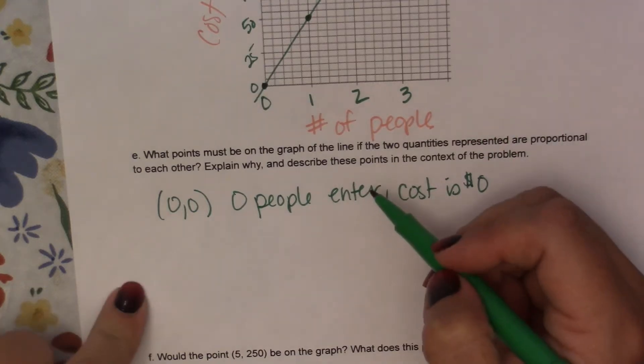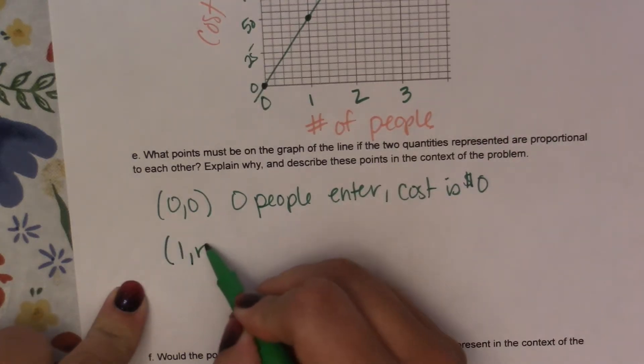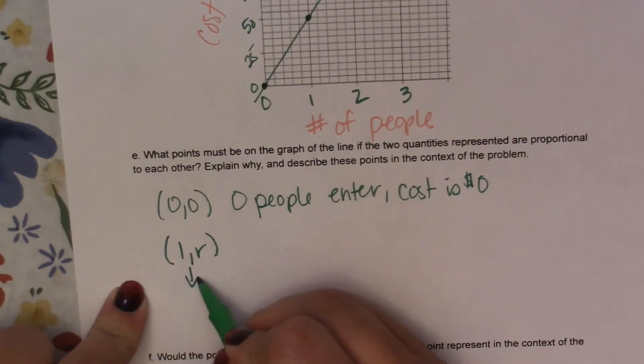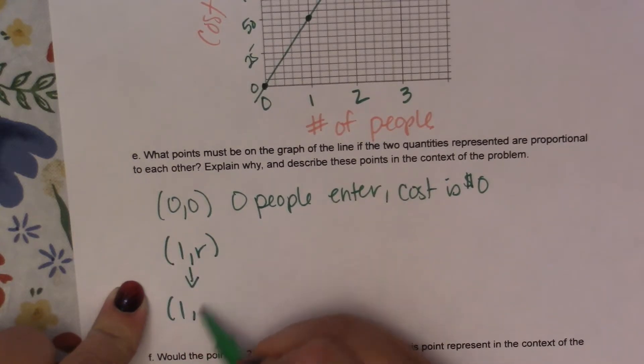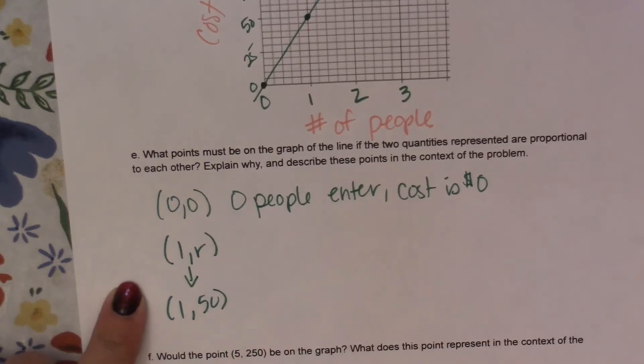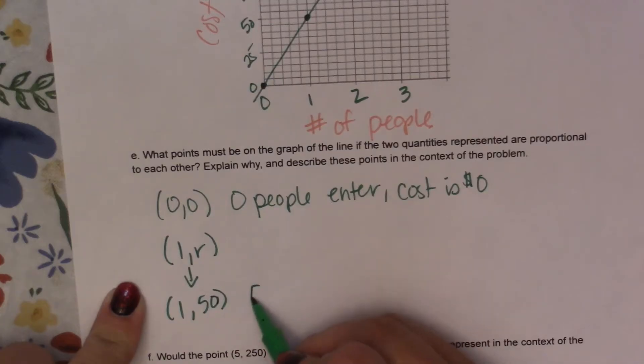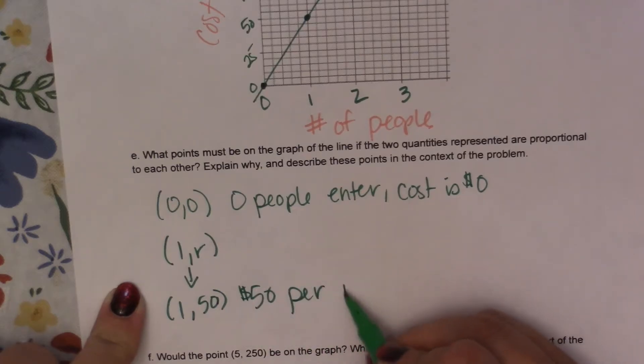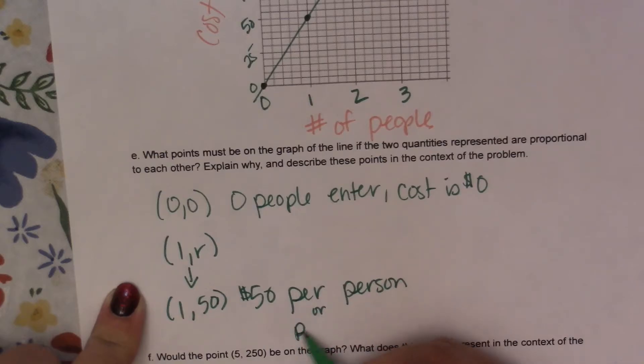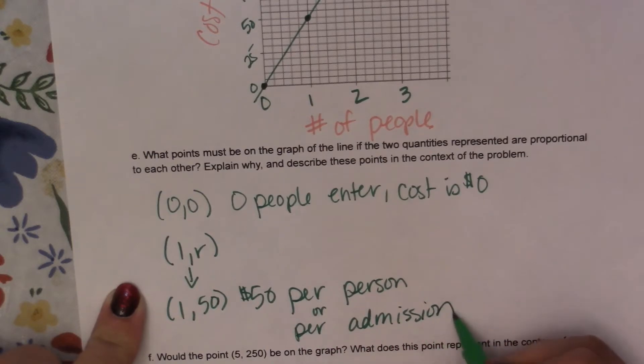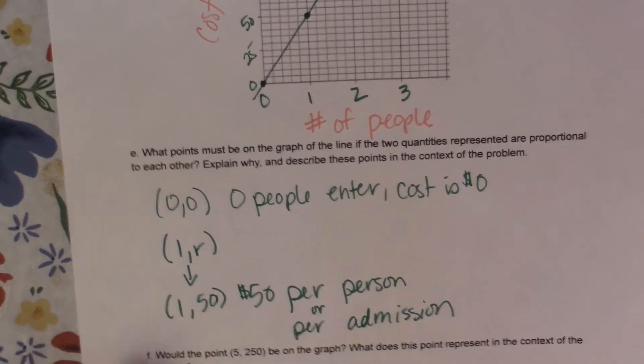And then the other point that we've talked about is that 1 comma R, where our R is our unit rate. Alright, so for this problem that would be 1 comma 50. And this would mean, let's write it the other way, so 50 dollars per person or you could say per admission.